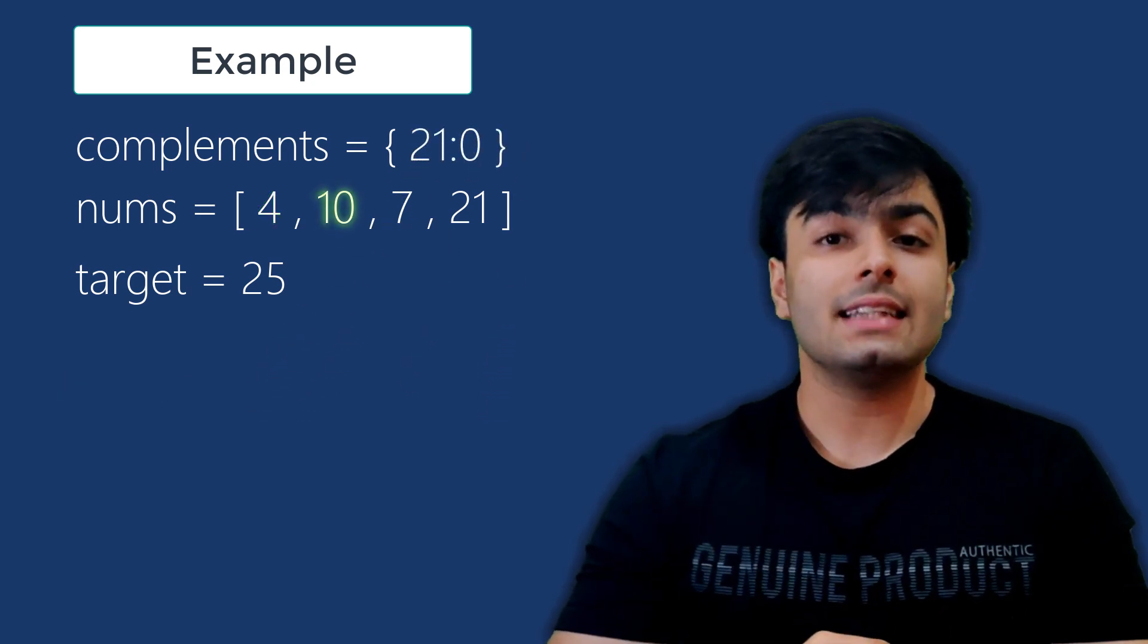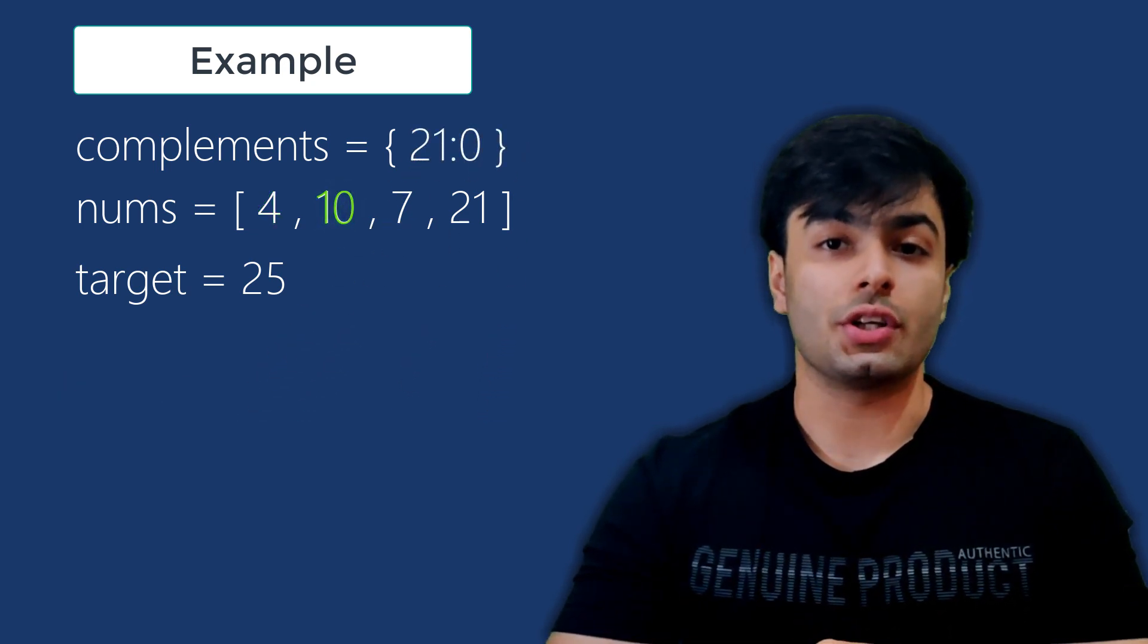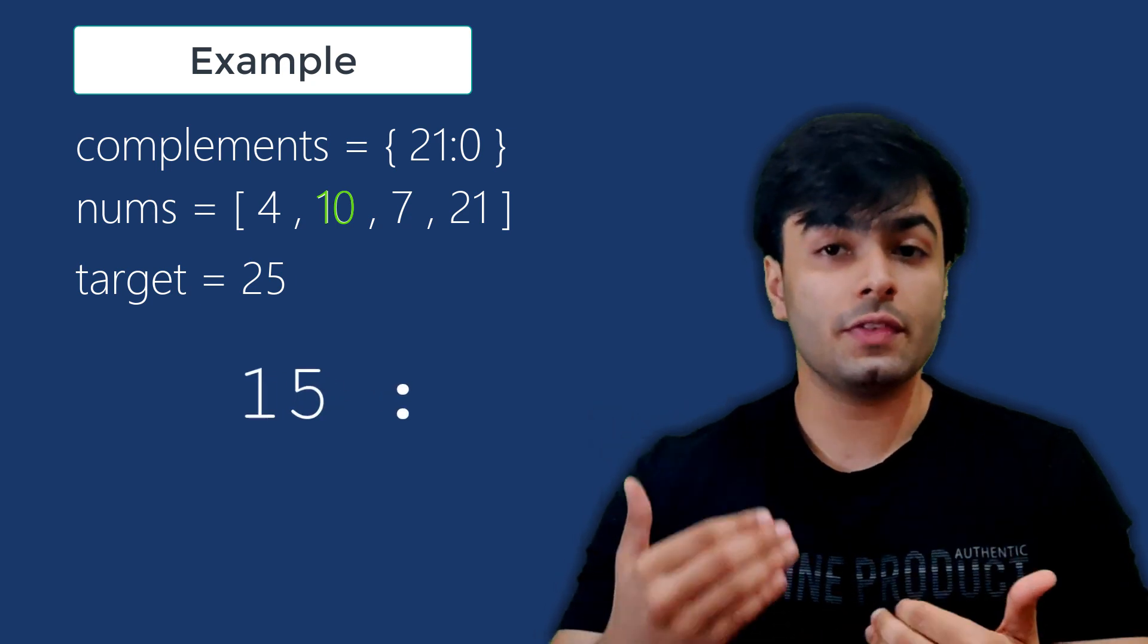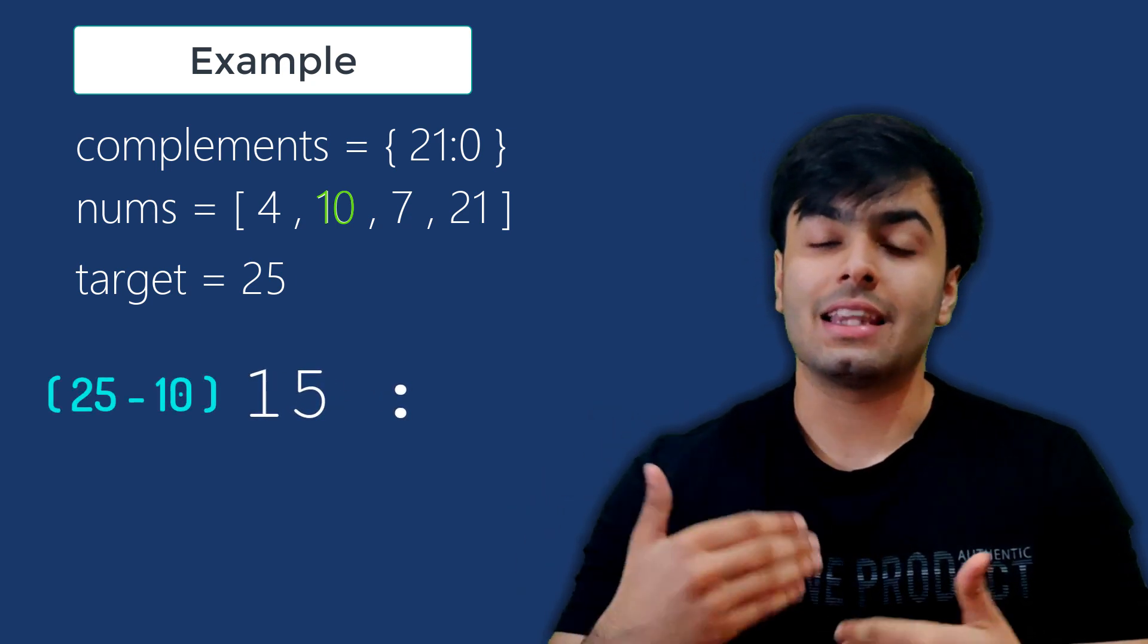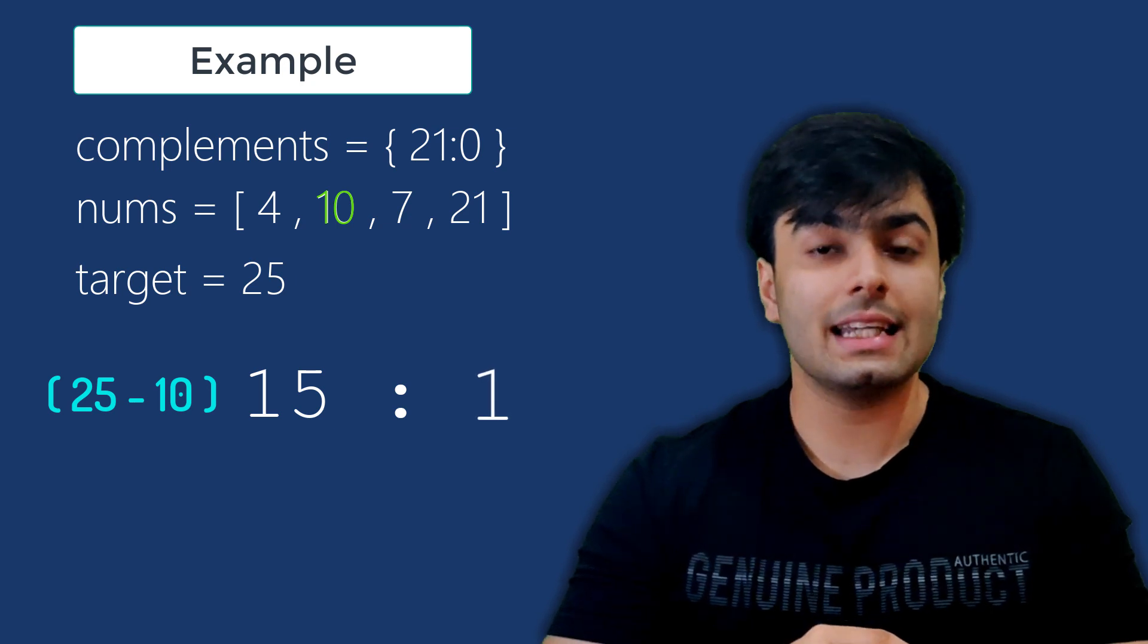Let's move on to 10. 10 is also not a key in the dictionary, so we can create a new element with the key set to 15, which is 10's complement, and the value to 1, which is 10's index number.